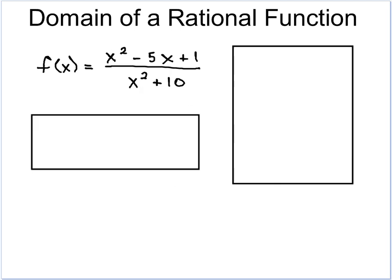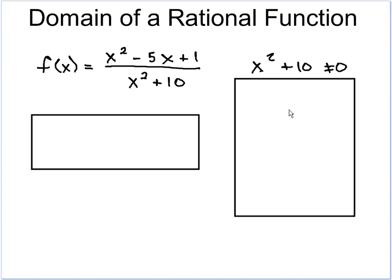All right, let's look at one more. Because there's a lot of little things when we're looking at domain that might cause you trouble. So we have (x² - 5x + 1) / (x² + 10) on the bottom. So at first glance, this looks like the second example we did when we had the x² - 4, except there's one slight difference in this one.